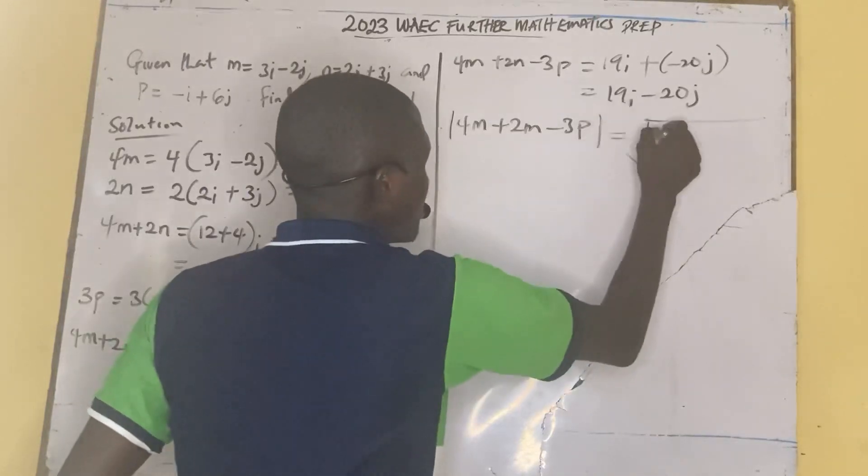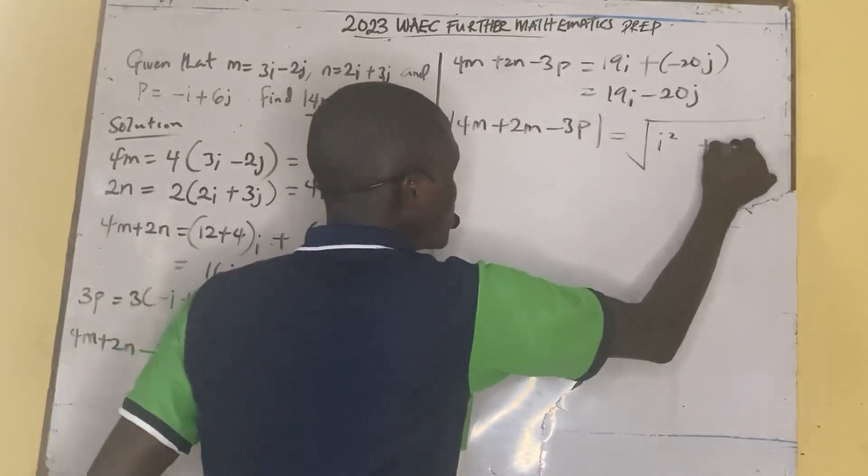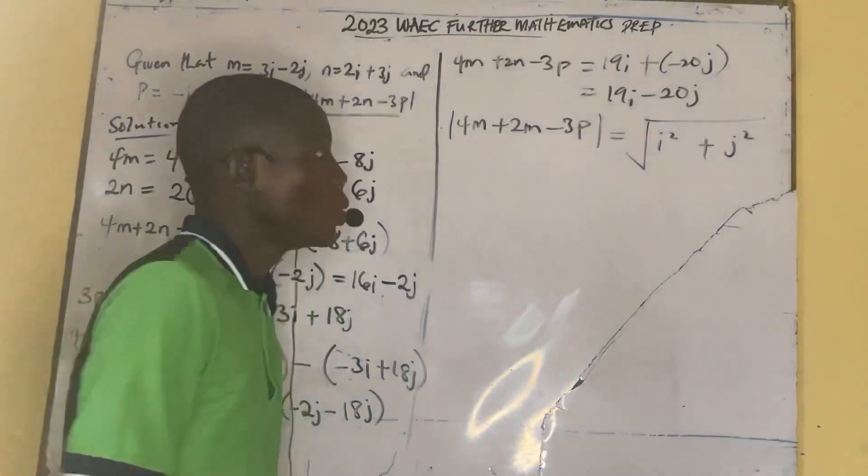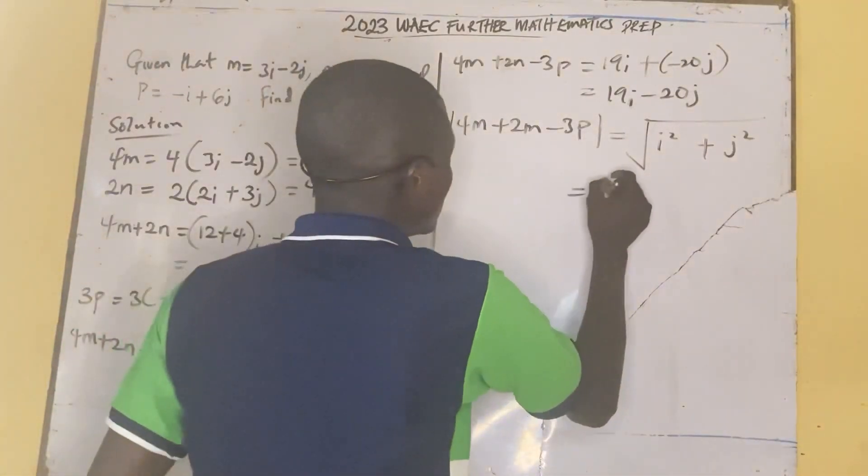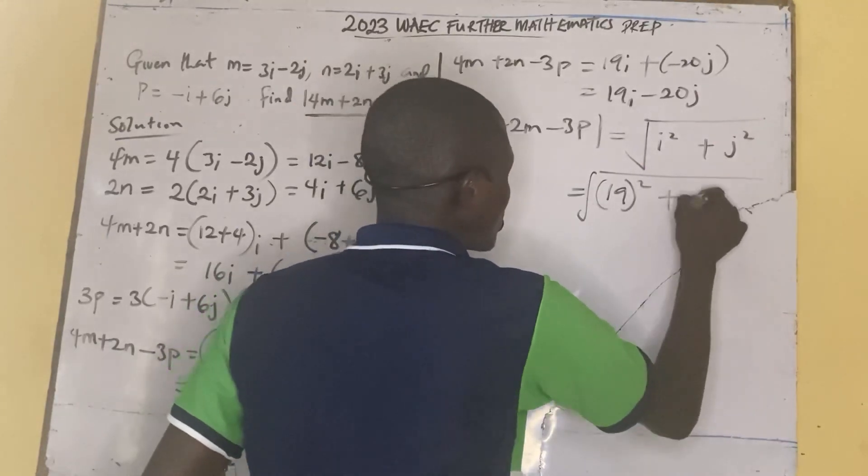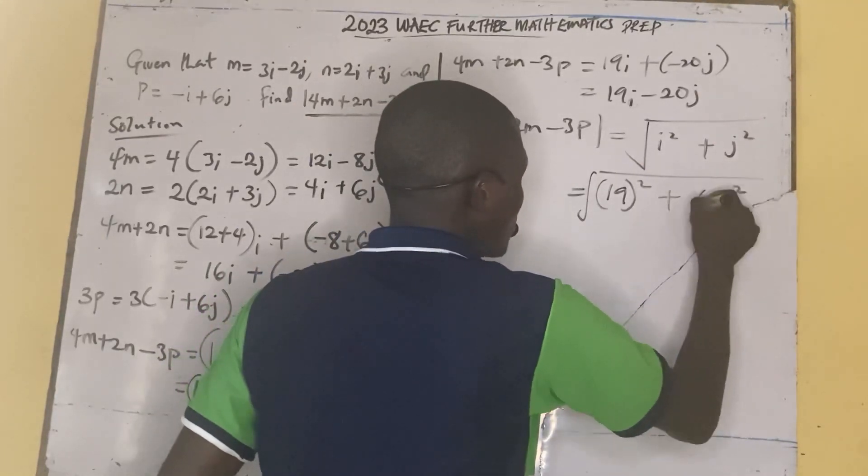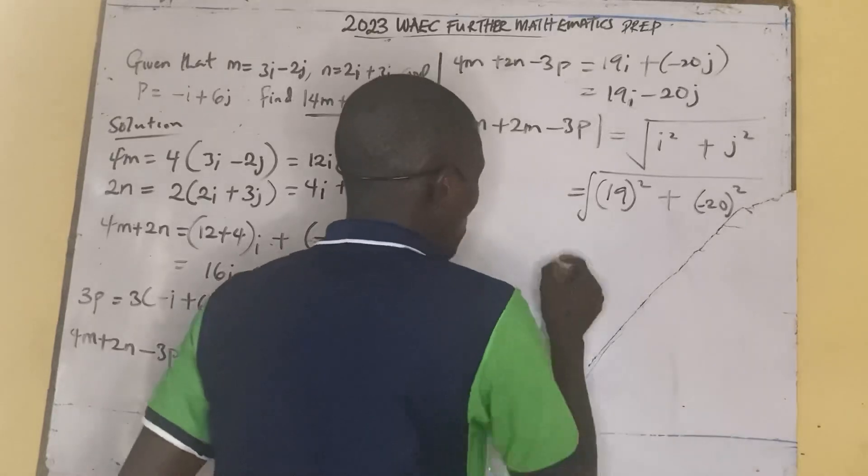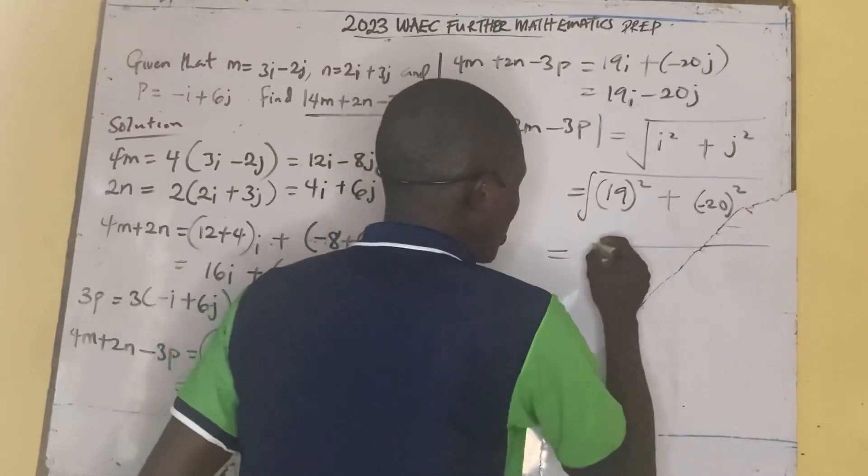The magnitude of a given vector will give us this one, i squared plus j squared. Since it is 2 by 2, we are going to have square root of 19 squared plus minus 20 squared.